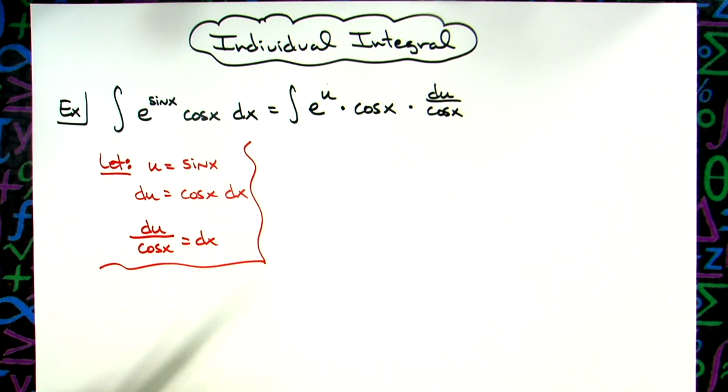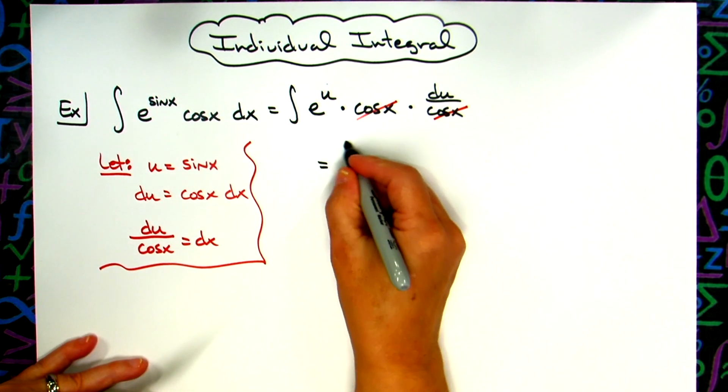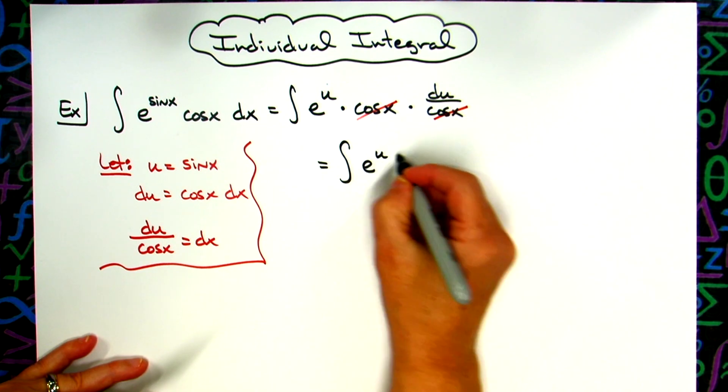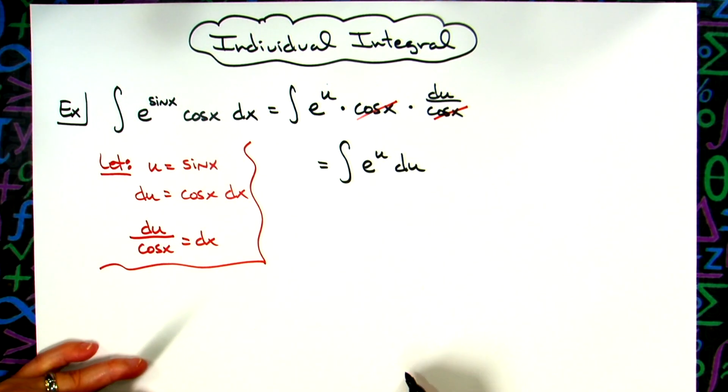What that's going to allow us to do then is to cross out our cosine x's. So now we are down to an integral that is all in terms of u. We've got the integral of e to the u du.